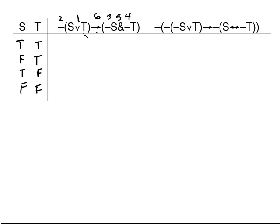All right, s∨t. We can look directly at the s and t columns already listed. When s is true and t is true, you get true. When s is false and t is true, you get true. When s is true and t is false, you get true. When both are false, you get false. So I've gone straight to step one, skipping the guide columns.